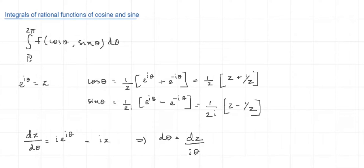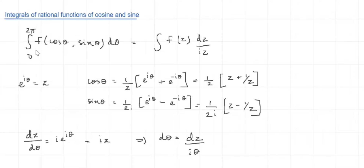So we are changing the integral from 0 to 2π of f(cosθ, sinθ) dθ into a function in terms of z, with dθ replaced by dz/(iz). Since θ varies from 0 to 2π, e^(iθ) travels a complete unit circle. Hence the curve of integration will be the unit circle taken in the counterclockwise direction.